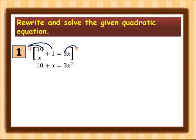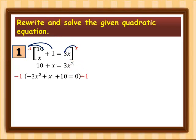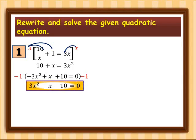We are going to rewrite this in standard form, so we have negative 3x squared plus x plus 10 is equal to 0. Now I'm going to multiply everything by negative 1, which gives me 3x squared minus x minus 10 is equal to 0.